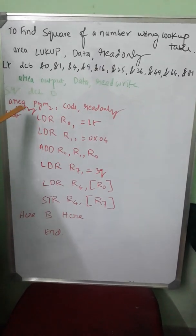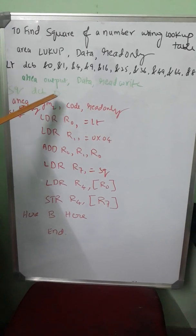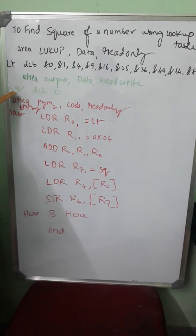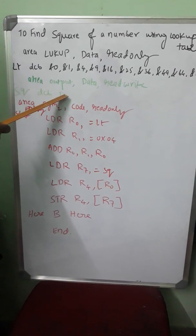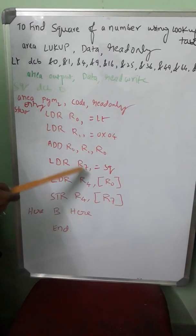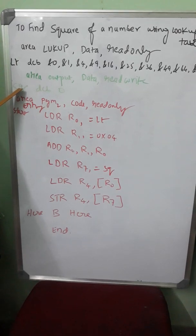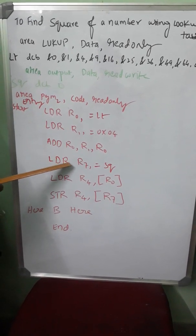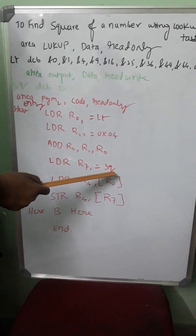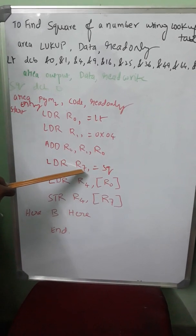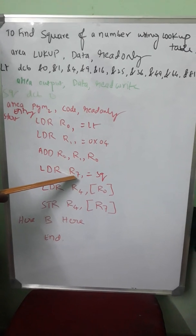Now I want to store the equivalent of square of 4 in the location labeled as SQ, and I have reserved a byte of location filled with 0. Now I make R7 to point at SQUARE. How do I do that? Using pseudo instruction LDR, load register R7 equals SQUARE. The numerical address of SQ will be put to R7.